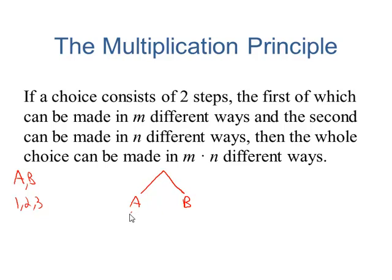If we choose a first, we have a choice of three numbers at that point, 1, 2, or 3. If we had chosen b first, we would have the same exact choices. If we count up the number of branches in this tree diagram, we see that there are six different ways.